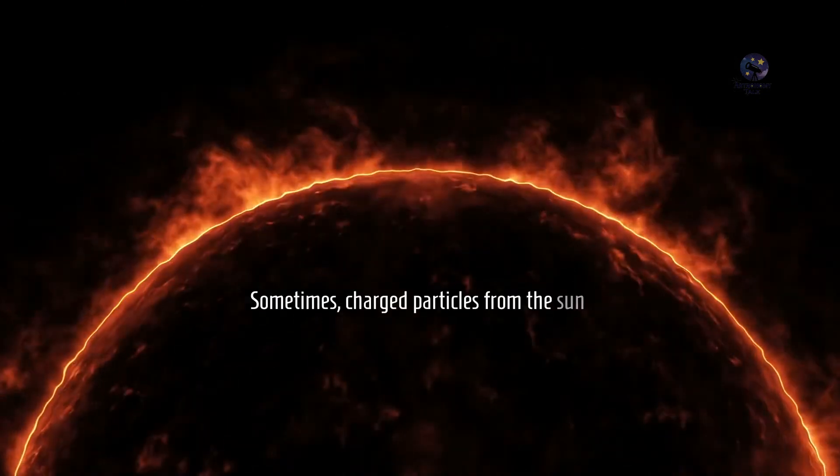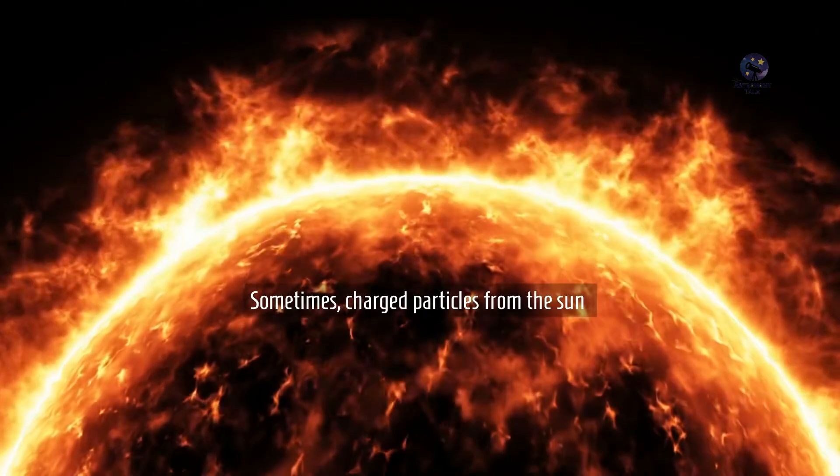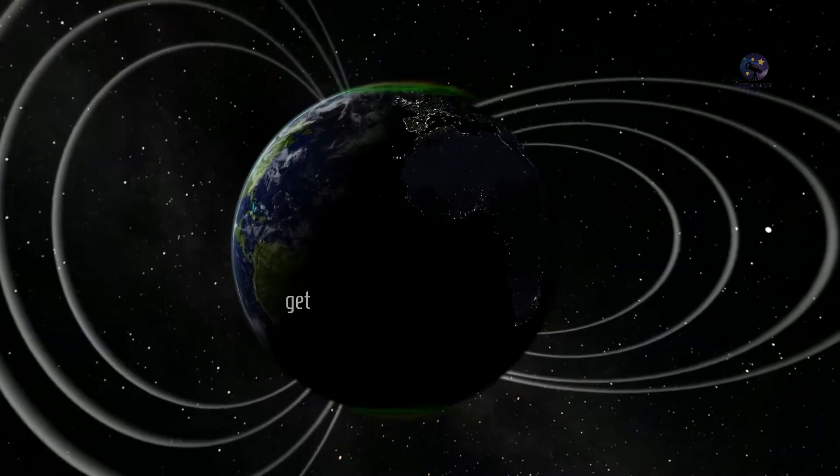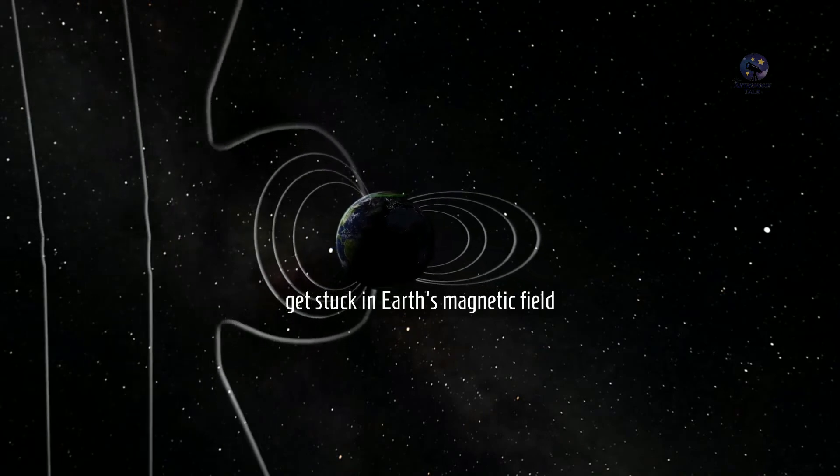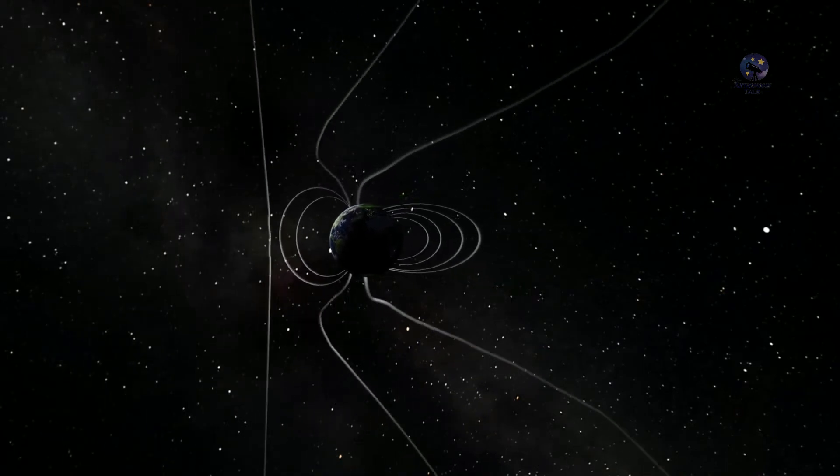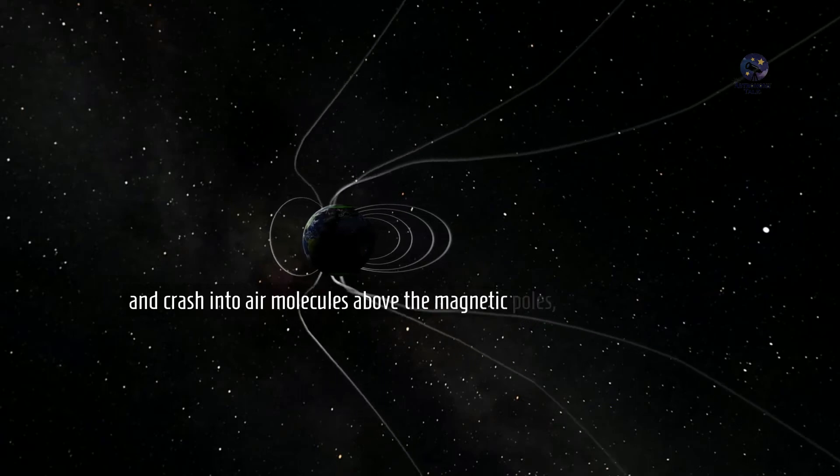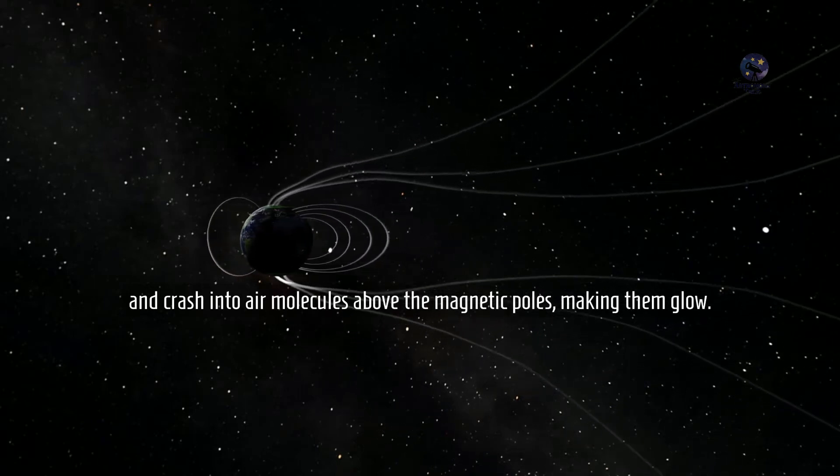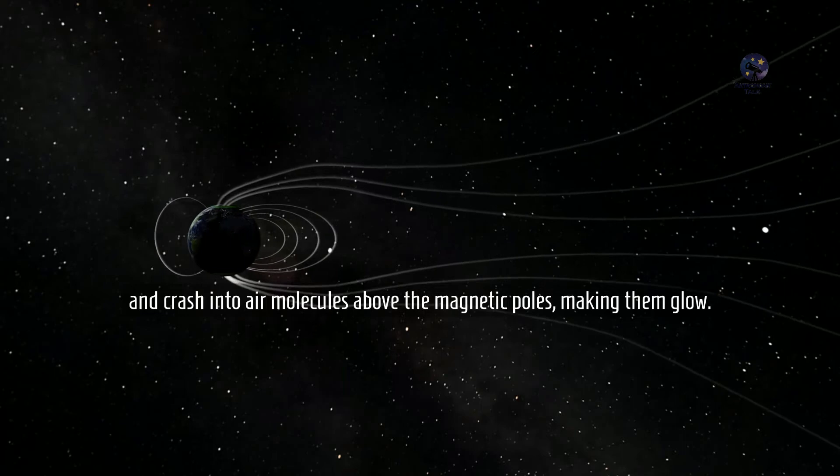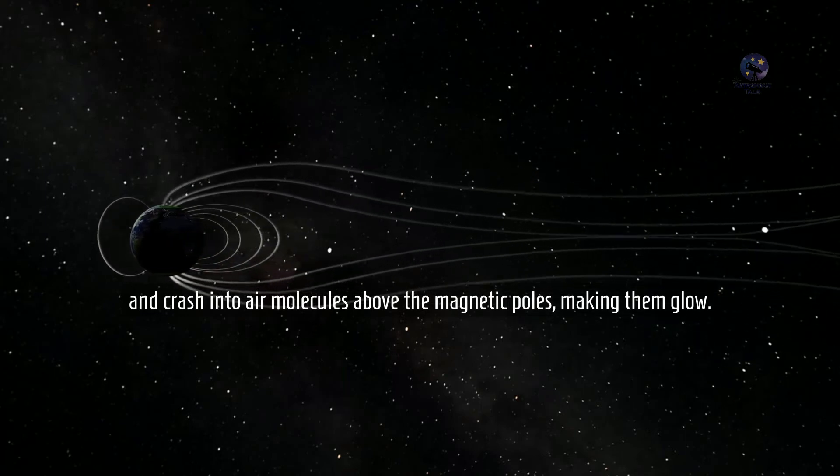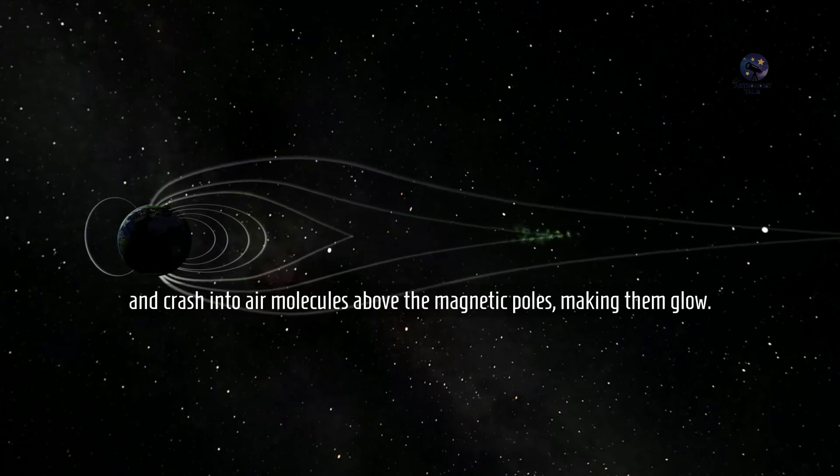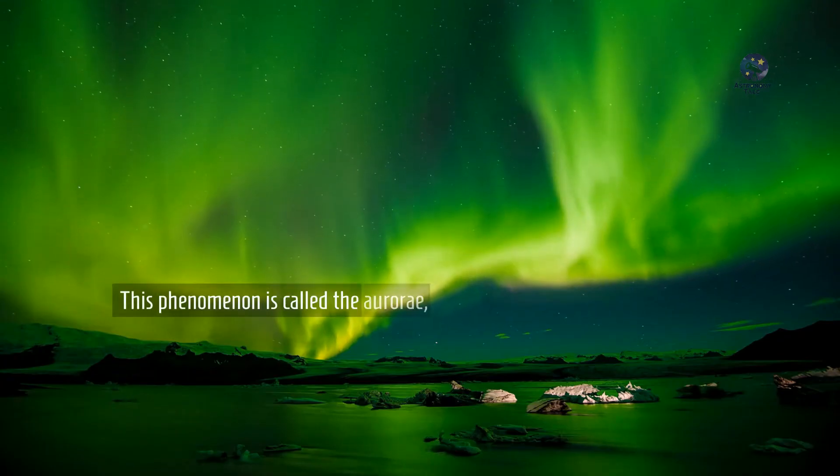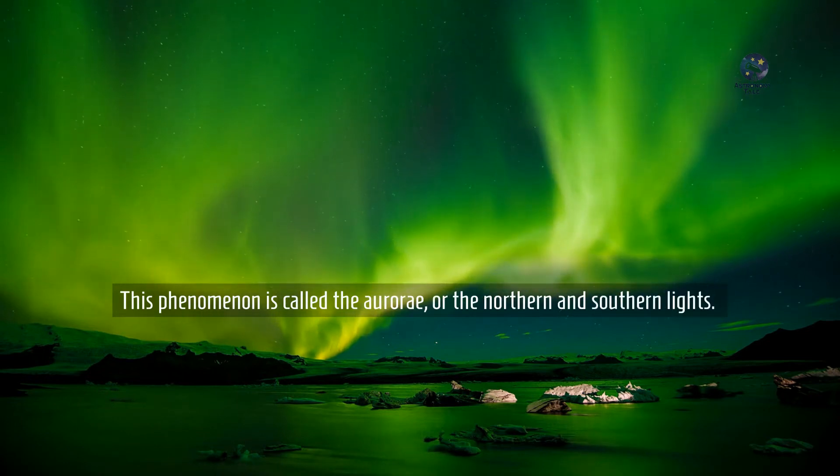Sometimes charged particles from the sun get stuck in Earth's magnetic field and crash into molecules near the magnetic poles, making them glow. This phenomenon is called the Aurora or the Northern and Southern Lights.